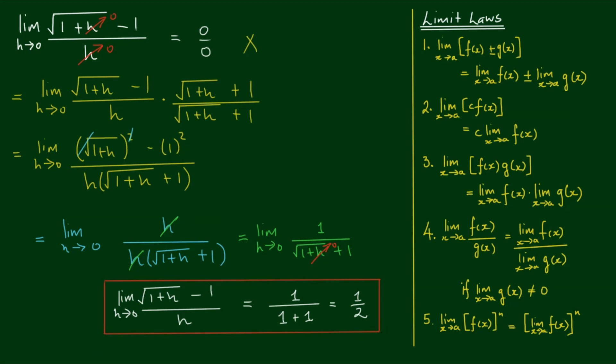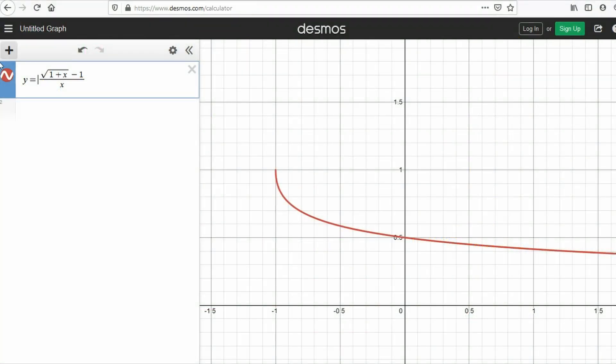Okay, let's confirm this result graphically. Here I've graphed the function y equals the square root of 1 plus x minus 1 over x. You can do this yourself with Desmos Graphing Calculator. It's a great tool. Check it out.